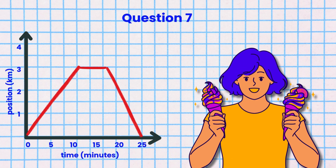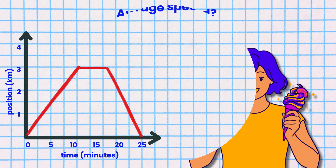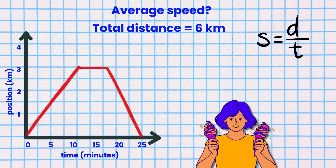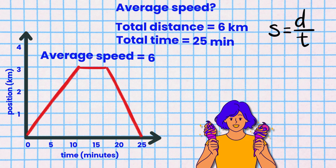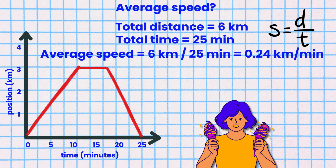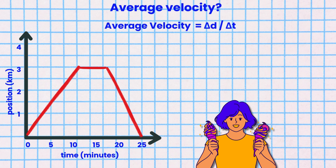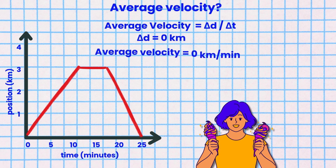Question 7. The position-time graph shows Ion's trip to the ice cream shop and back home. What is Ion's average speed for the entire trip? The total distance equals 6 kilometers: 3 kilometers to the shop and 3 kilometers back home. Total time equals 25 minutes. So average speed is 6 kilometers divided by 25 minutes, which equals 0.24 kilometers per minute. What is Ion's average velocity for the entire trip? Ion's displacement equals 0 kilometers because the starting and finishing point are the same, which is home. So average velocity equals 0 kilometers per minute.